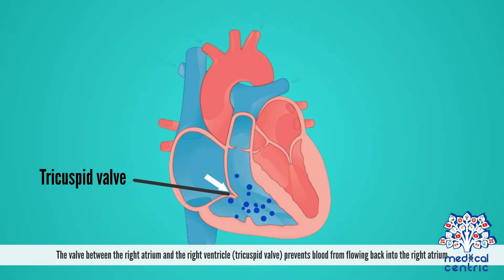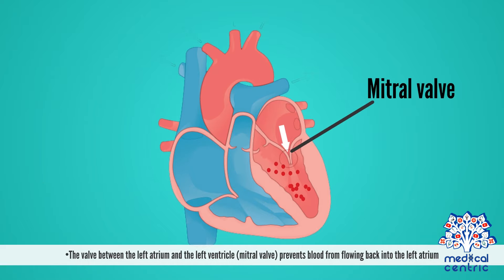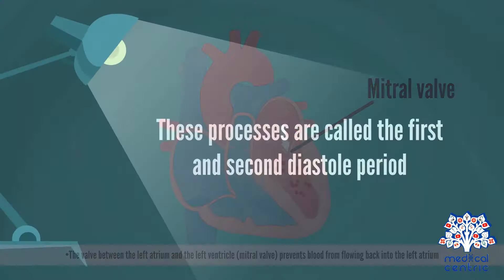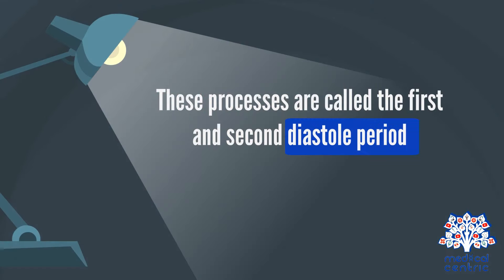The valve between the right atrium and the right ventricle — the tricuspid valve — prevents blood from flowing back into the right atrium. The valve between the left atrium and the left ventricle — the mitral valve — prevents blood from flowing back into the left atrium. These processes are called the first and second diastole period.